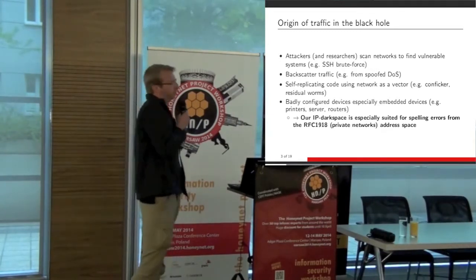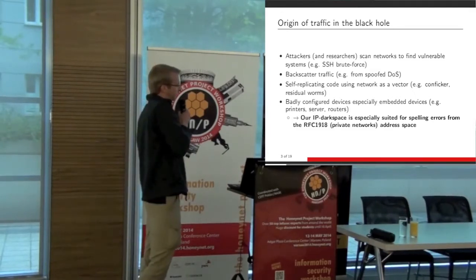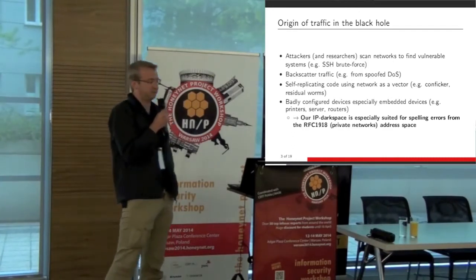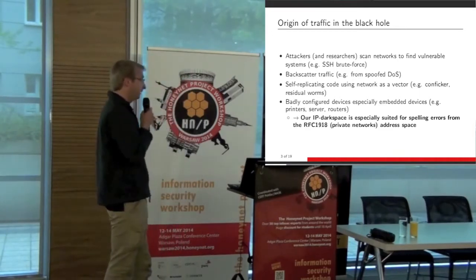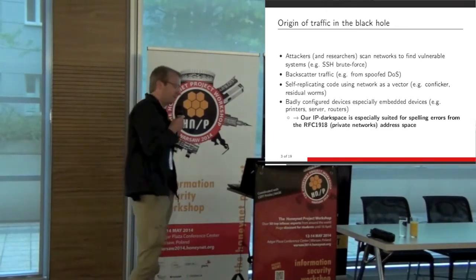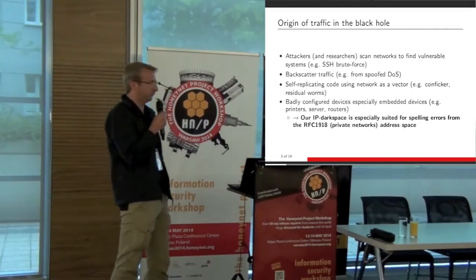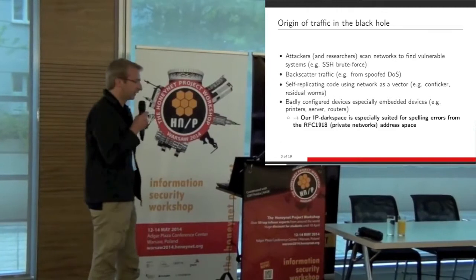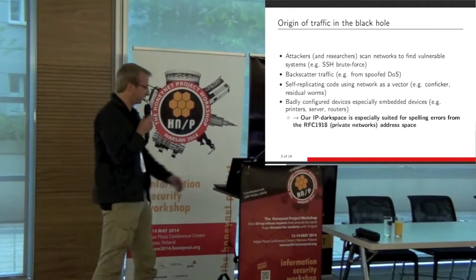But when we received, two years ago, a quite important black hole network, we discovered that this black hole network was really close to IP networks allocated from RFC 1918. That means we had a network really close to the address space of private networks. That gave interesting results because when we started to analyze the dataset, we discovered we got 80% more traffic than a regular black hole. So it's not residual traffic — it's traffic generated by human mistakes, and that's the interesting part.